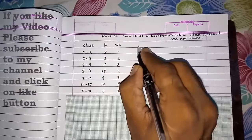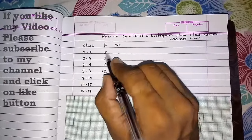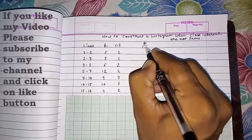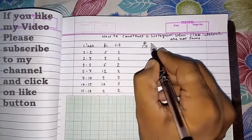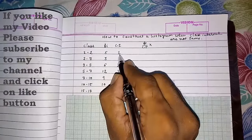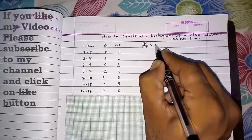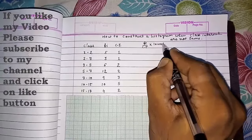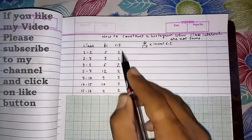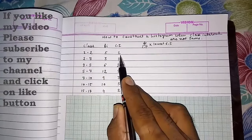For finding new frequency, what we have to do? We have to divide this frequency by class interval, and then we have to multiply with the lowest class interval. First we have to see which one is the lowest class interval. 1 is the lowest.